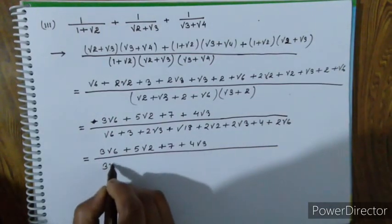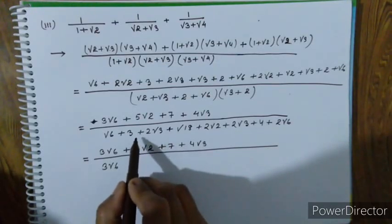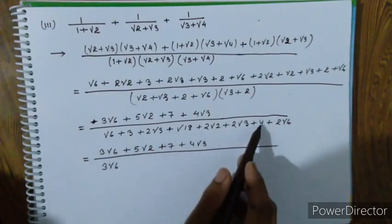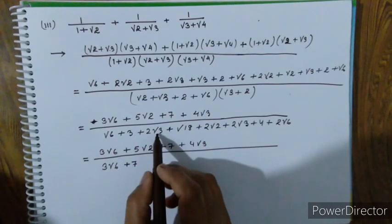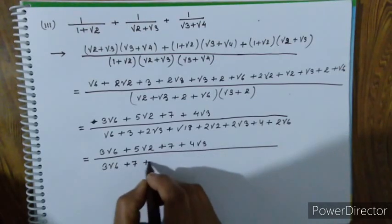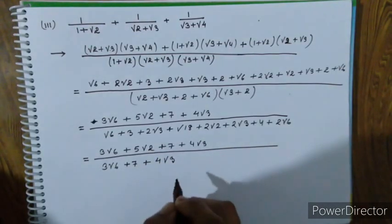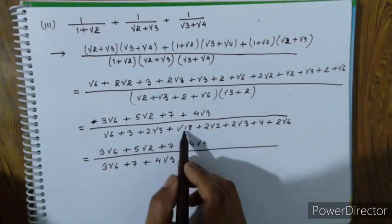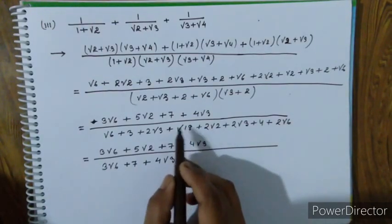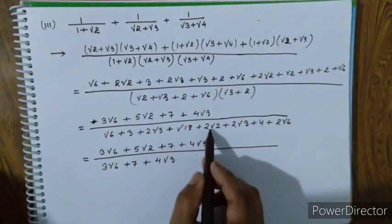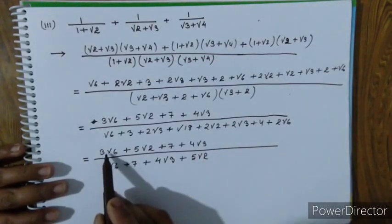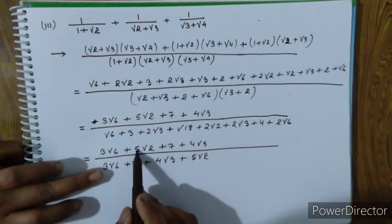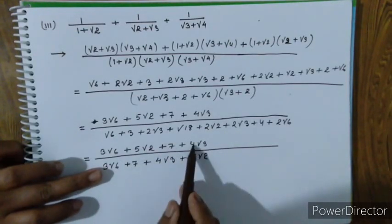3 to 6. The result is seven root 3, four root 3. This is 3 root 2: nine into two gives three root two, two root two, plus five root two. Three root 6 plus five root 2, seven four root 3.